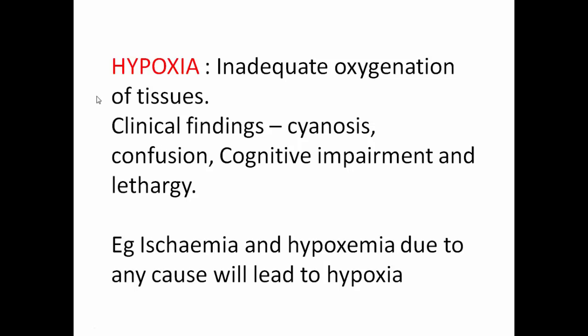First, hypoxia. Hypoxia is inadequate oxygen delivery to the tissues. It can be due to any cause leading to inadequate oxygen delivered to the tissues. Hypoxia can be secondary to ischemia, hypoxemia, or high altitude. Anything which leads to inadequate oxygen delivery to the tissues is hypoxia. As you can see in the diagram, hypoxemia is also one of the causes of hypoxia.